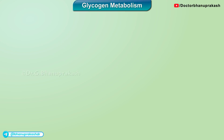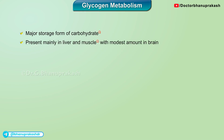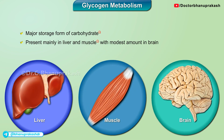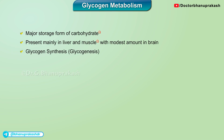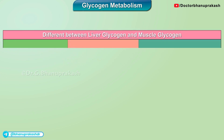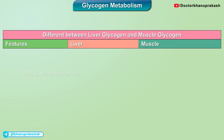Glycogen metabolism. Glycogen is the major storage form of carbohydrate, present mainly in the liver and muscle, with modest amounts in the brain. Glycogen synthesis is known as glycogenesis, and glycogen breakdown is known as glycogenolysis.